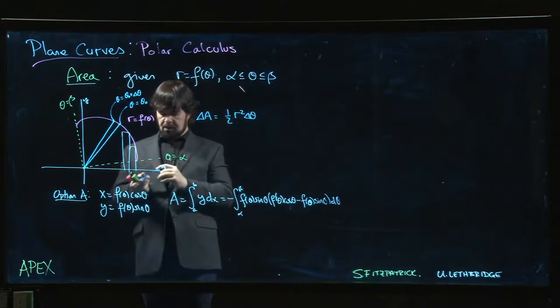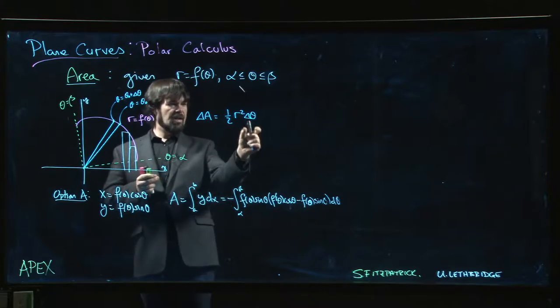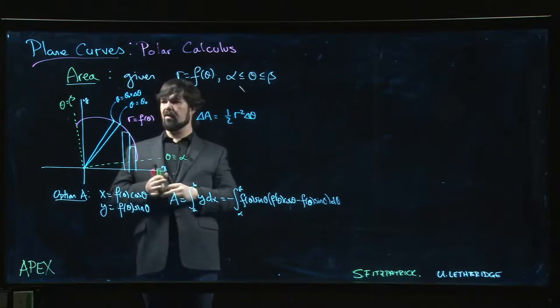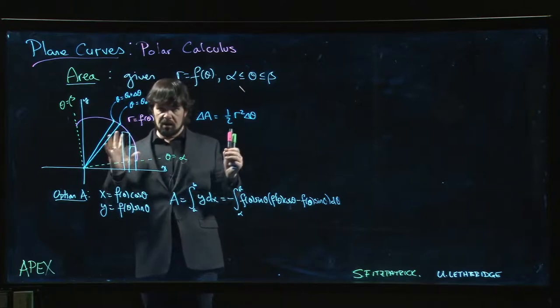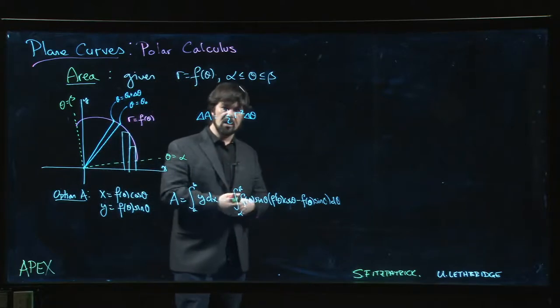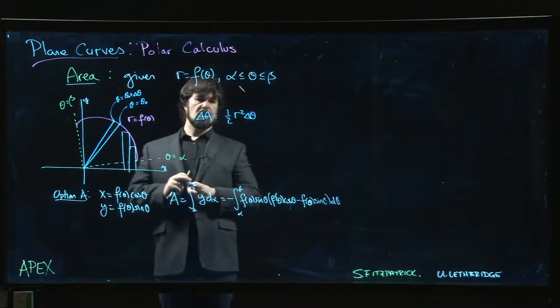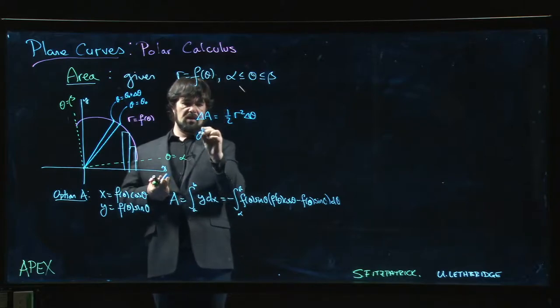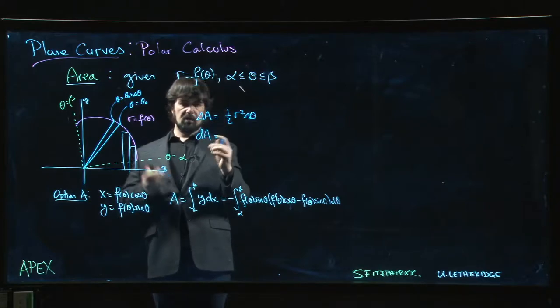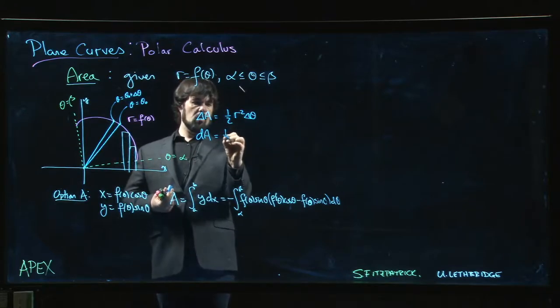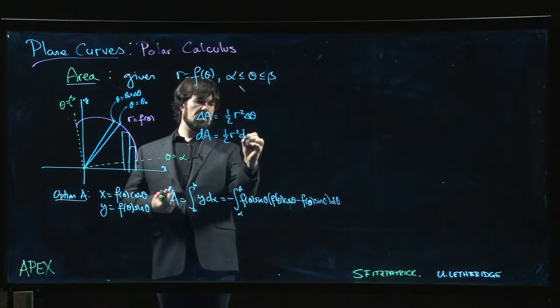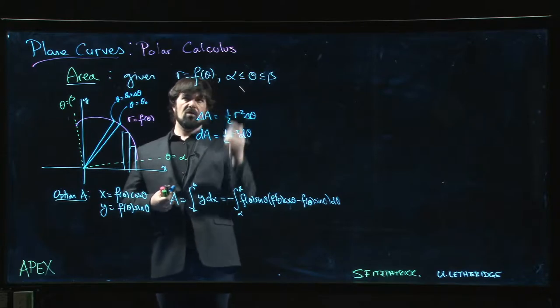Now r is not constant here, but we do the usual argument that if delta theta is small enough, then the change in f of theta from here to there is sufficiently small that we can ignore it. And so we get, in the limit, we do the usual limiting differential approximation and we get something that looks like one-half r squared d theta.